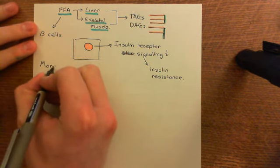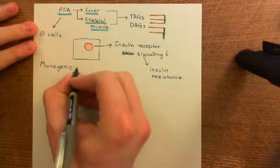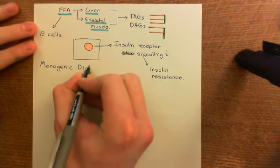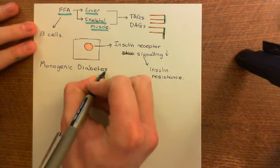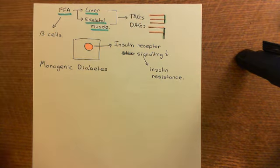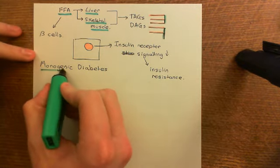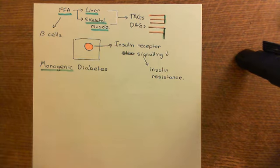There are loads of different types of monogenic diabetes, and they are all really, really rare. So firstly, what does monogenic diabetes mean? Monogenic means that it's a type of diabetes caused by a mutation in a single gene — an inherited mutation in a single gene.